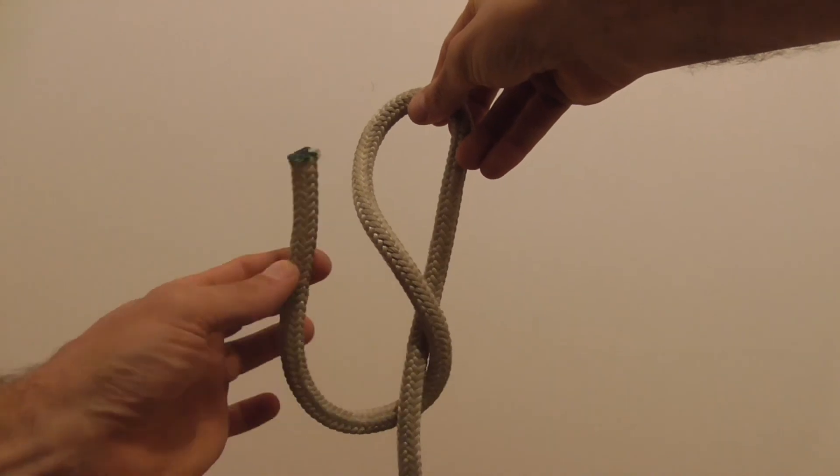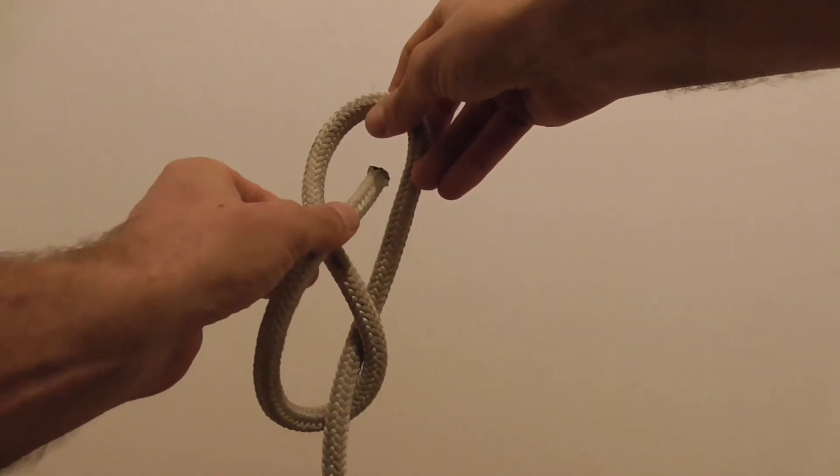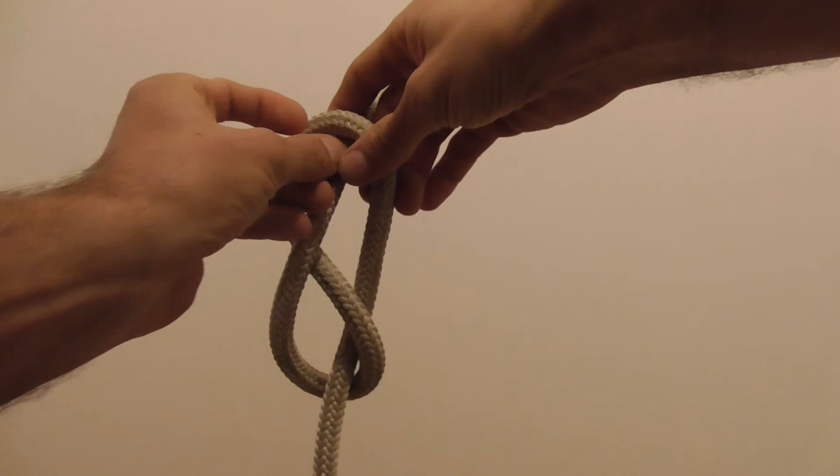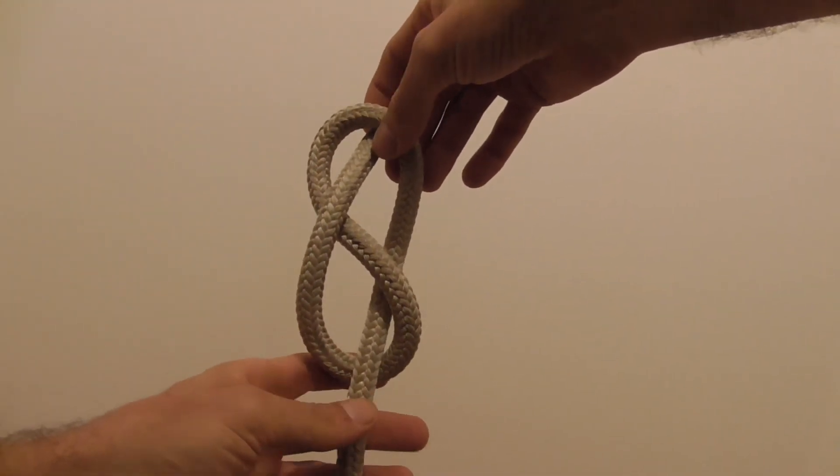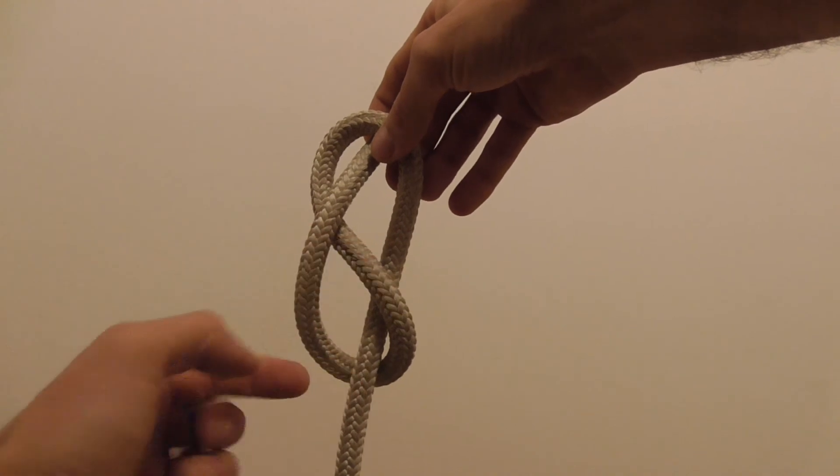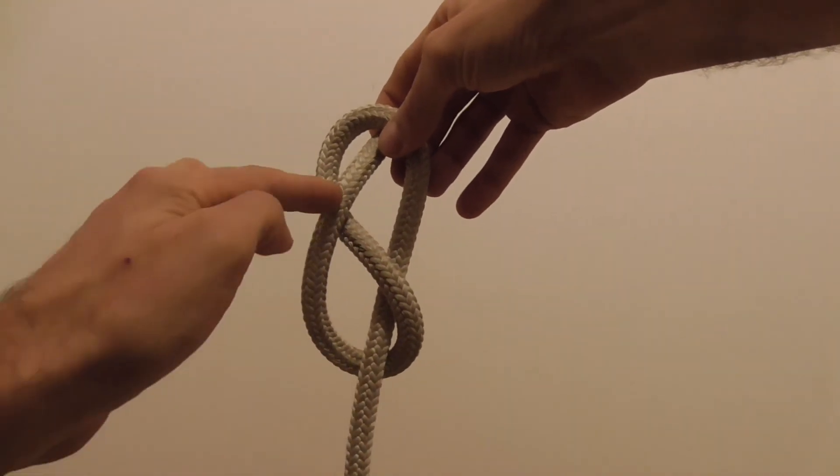And then take the working end and tuck it back through the top loop, basically doing an over under, over, weave, over, under and then over.